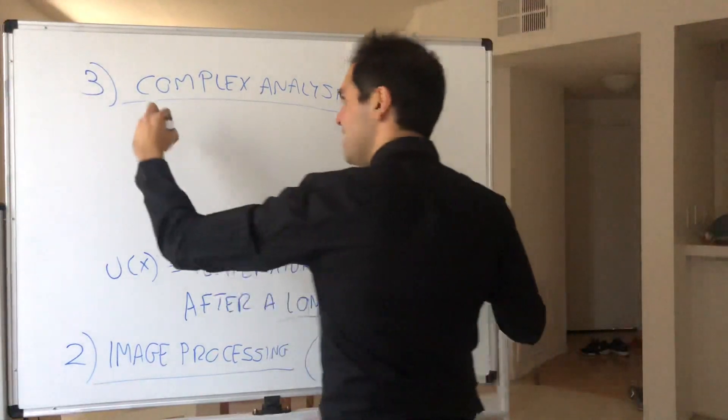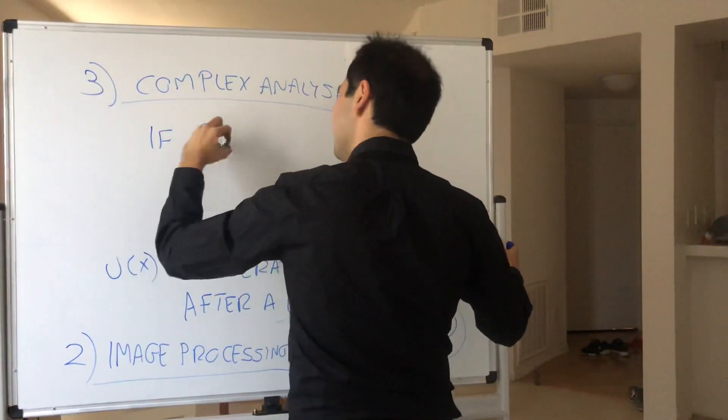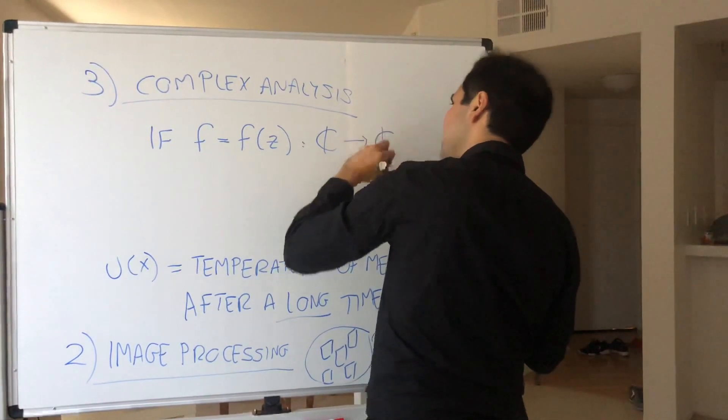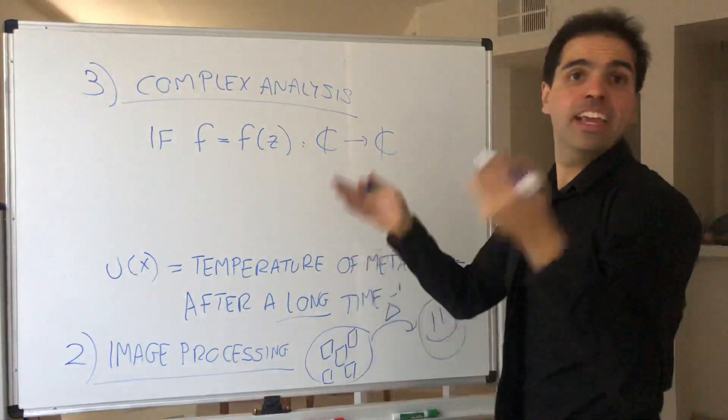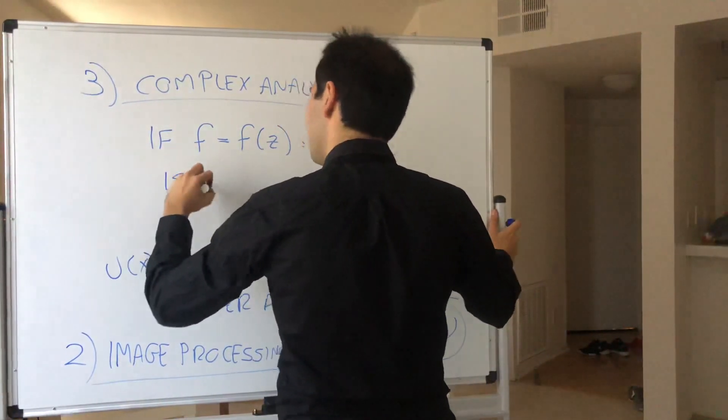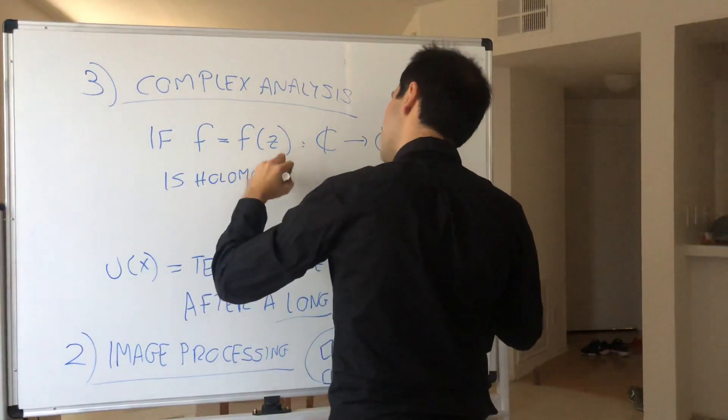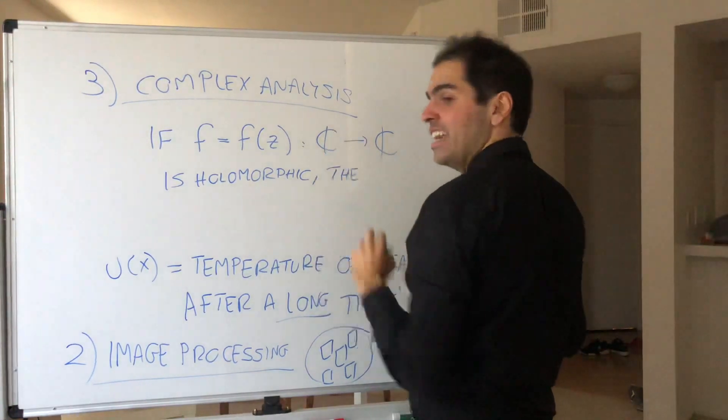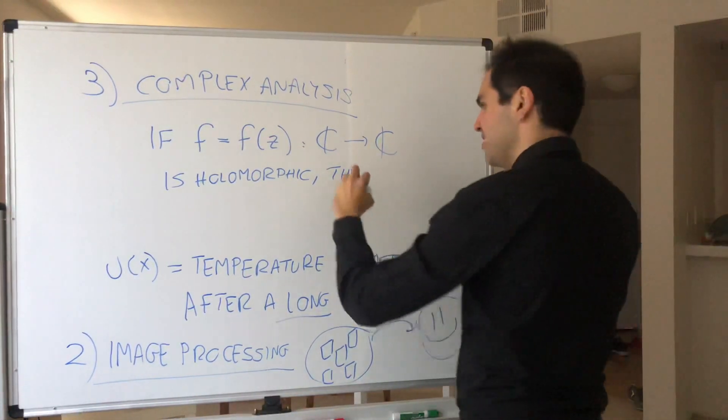Because at least in two dimensions, we know that if a function of a complex variable, if f goes from C to C, and it's analytic or holomorphic or whatever you want to call this, it's holomorphic,